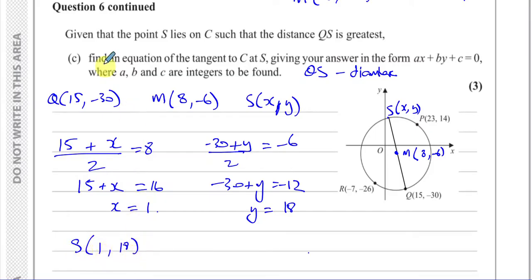We could have also figured this out by using some sort of visual method. Like I know that this is the midpoint between this point and that point. So if I go from 15 to 8 I have to go down 7. So if we go from 8 to X I've got to go down 7. 8 minus 7 is 1. And if I go from -30 to -6 we'll have to add 24. So from -6 to Y I have to also add 24. And -6 plus 24 is 18. We end up with (1, 18). Same answer.